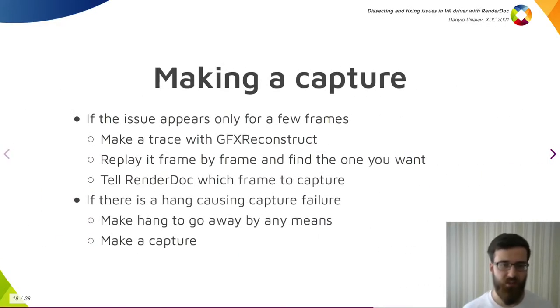Sometimes you cannot make a right capture because the issue appears only for a few frames, or there is a hang causing capture failure. First one could be worked around by making a trace with GFXReconstruct, replaying it frame by frame to find the one you want, and telling RenderDoc which frame to capture from GFXReconstruct trace. Helped me a lot in the past. If there is a hang causing failure of a capture, you could try to make the hang go away by any means, like preventing specific draw or dispatch to actually happen. Then making a capture and checking that it hangs without the previous changes. In the past, that helped me to debug hangs which completely hanged the system, without any recovery. By making a trace and keeping the call from being executed, I was able to inspect the shader and its inputs to make a standalone reproducer.